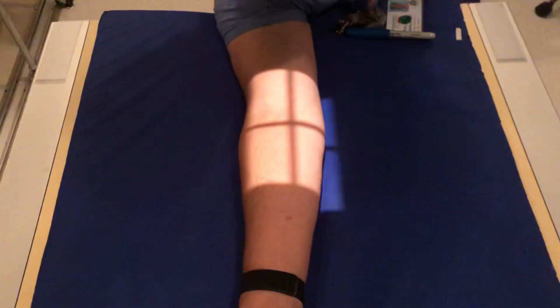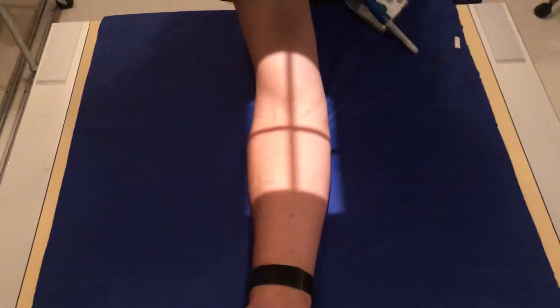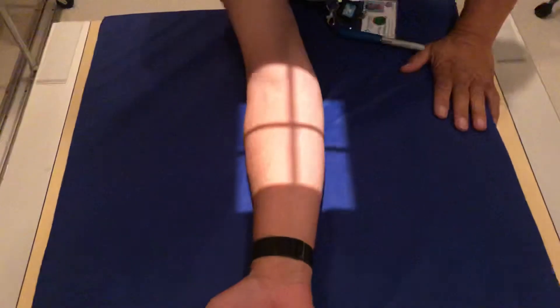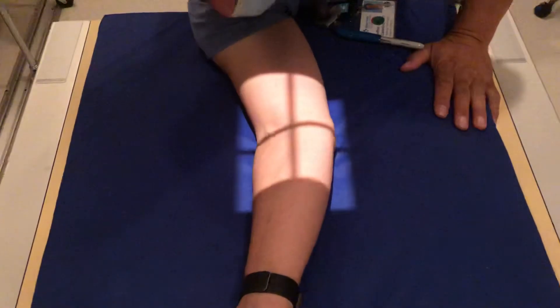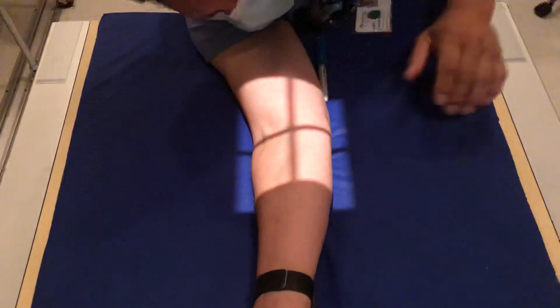That'll be your first view, right about there. The second view is going to be an external oblique, and the way that works is you're going to roll the patient out about 45 degrees this way, which will throw the radial head off the ulna.